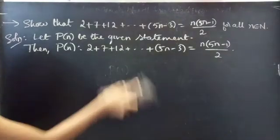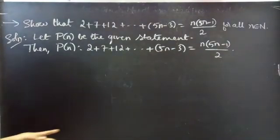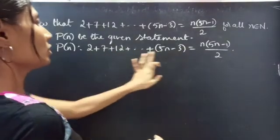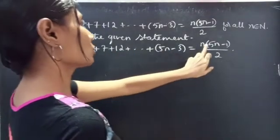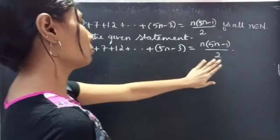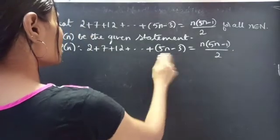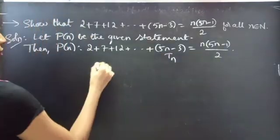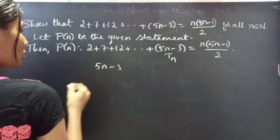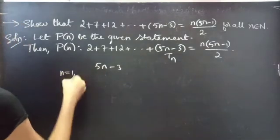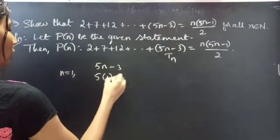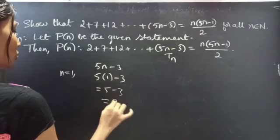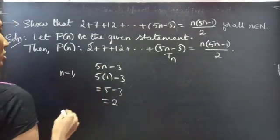So here we are given some numbers: first term, second term, third term, plus so on, plus nth term, equals n(5n minus 1) by 2. So (5n minus 3) is considered as the nth term. If n equals 1, then 5 times 1 minus 3 equals 5 minus 3, which is equal to 2 — that gives the first term.